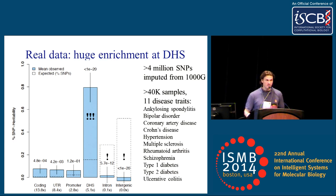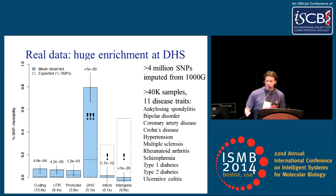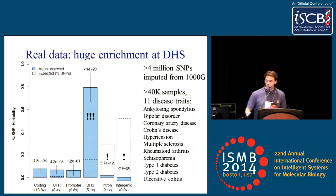Perhaps even more interesting than what we found for DHS is what we didn't find. Looking at intronic and intergenic regions, the p-values say they are significantly depleted, but they're actually very close to 0 and not significantly different from 0. This is saying that for this set of traits there's virtually no signal in intronic and intergenic regions after using a variance components approach to tease apart LD. As a final note, coding regions are only 1% of the genome and the most enriched at 13.8x, but because they're only 1% of the genome they don't explain that much of the heritability.